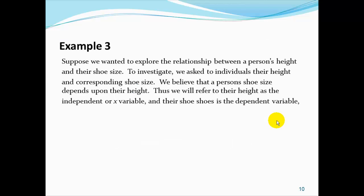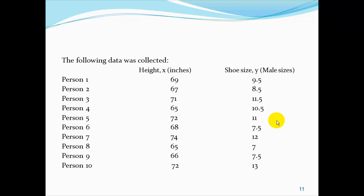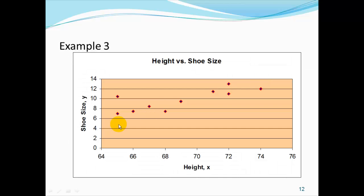Let's explore the actual data for another example. Suppose we wanted to explore the relationship between a person's height and their shoe size. We asked individuals their height and corresponding shoe size, believing that a person's shoe size depends upon their height. Thus, we refer to their height as our independent or x variable and their shoe size as our dependent y variable. Suppose the following data was collected — for each person, we listed their height and their shoe size. Here is a graph of this data, and again these data pairs appear to be grouped around an imaginary line.